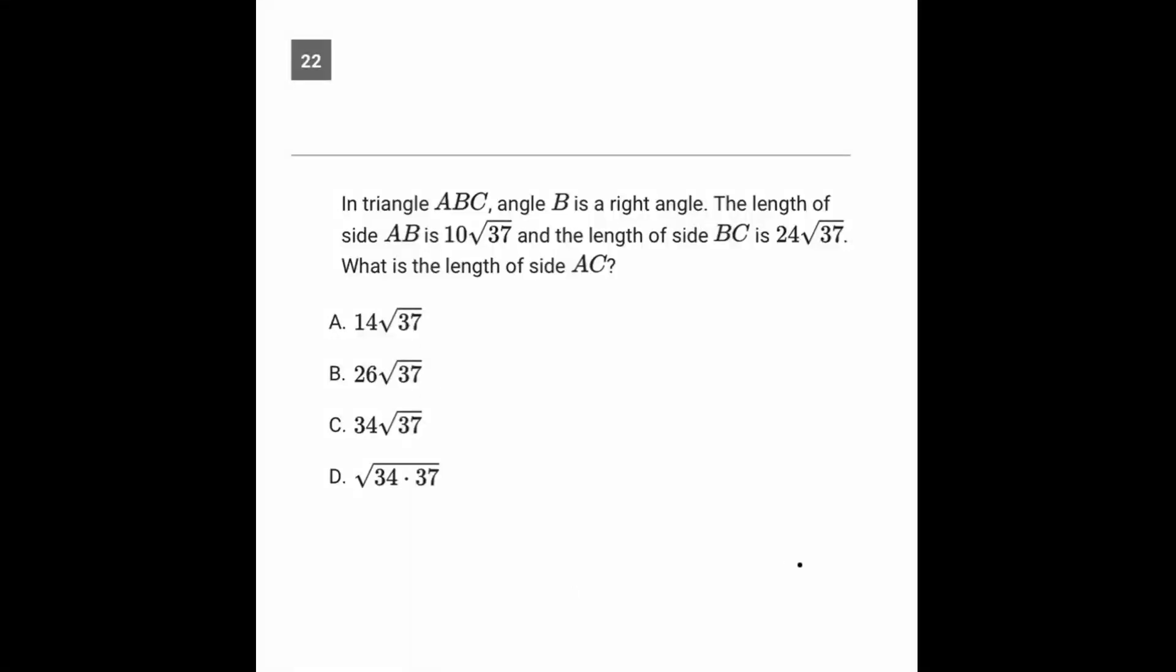Now going over to question number 22. We're told about a triangle that is a right triangle with angle B as the right angle. AB is 10√37, so let's write that in here. AB is 10√37, and BC is 24√37.